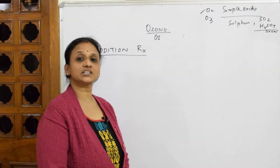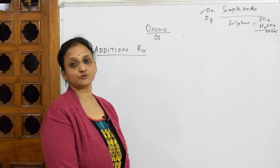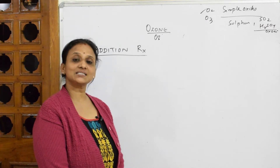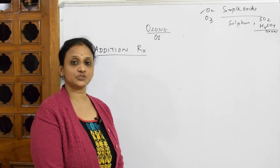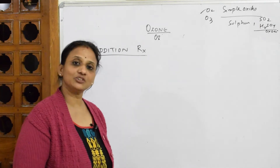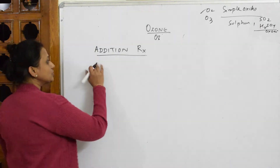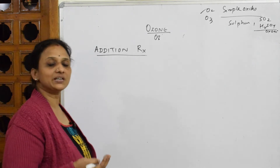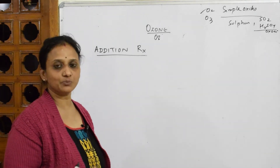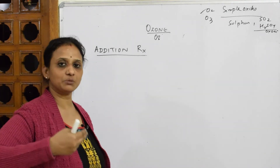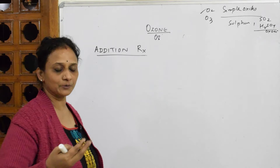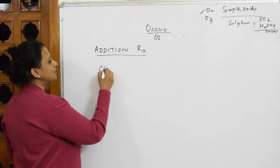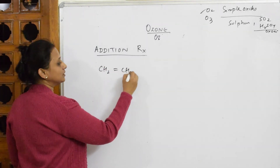We have seen the oxidizing properties of ozone and the reducing action of ozone. Now let's come back and see the addition reactions of ozone — this is basically a grade 11 question. When we speak about addition reactions, we normally speak about unsaturated compounds which have double bonds as well as triple bonds, like alkenes and alkynes.